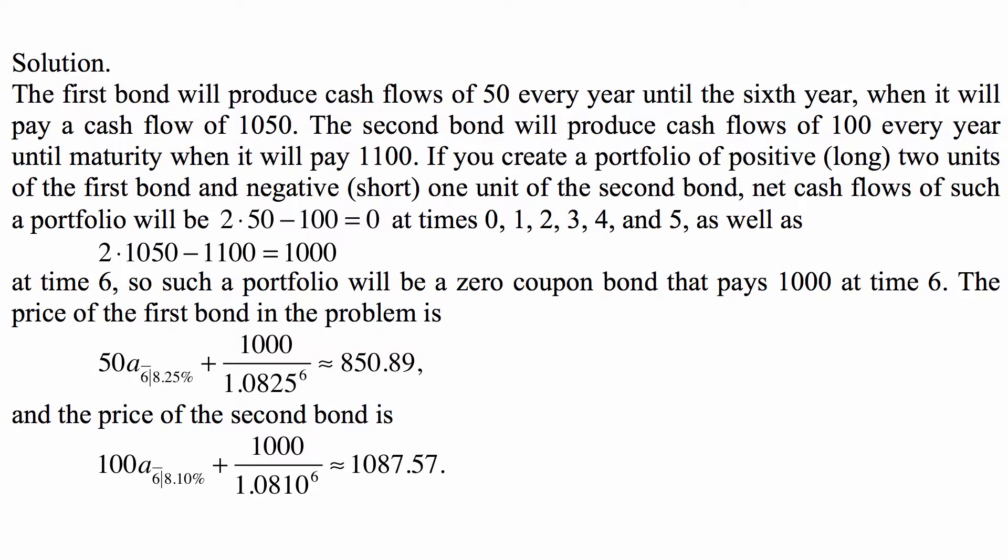And here's the solution. So the first bond will produce cash flows of 50 every year until the sixth year, when it will pay a cash flow of 1,050. The second bond will produce cash flows of 100 every year until maturity, when it will pay 1,100. And if you create a portfolio of positive long two units of the first bond and negative short one unit of the second bond.